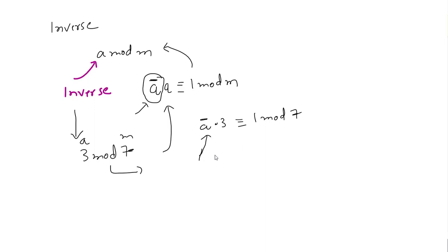So if you have a look at 5, if we replace a inverse with the value of 5, this will become 5 times 3. Let's check whether it's congruent to 1 mod 7. We know this is equal to 15, and if you divide 15 by...